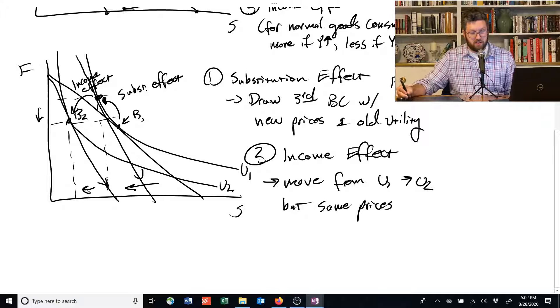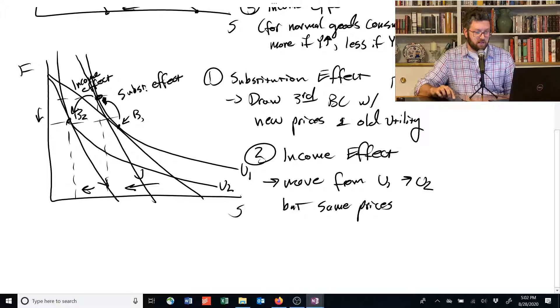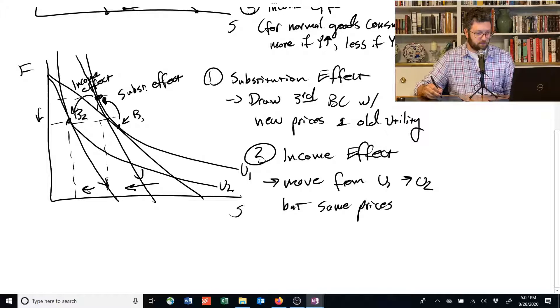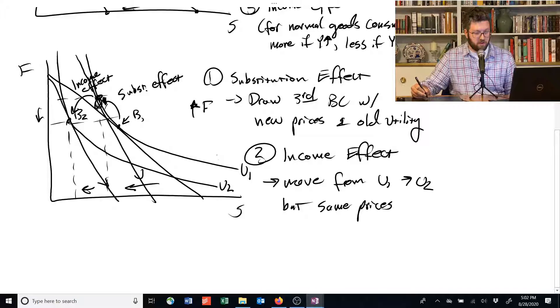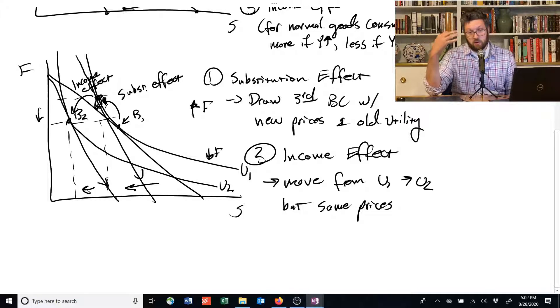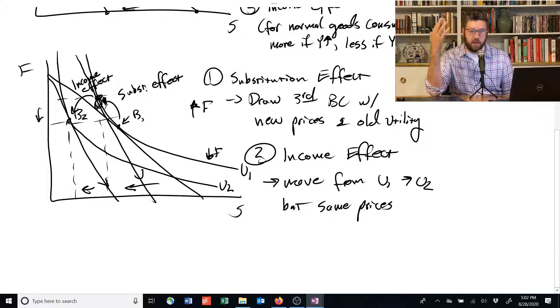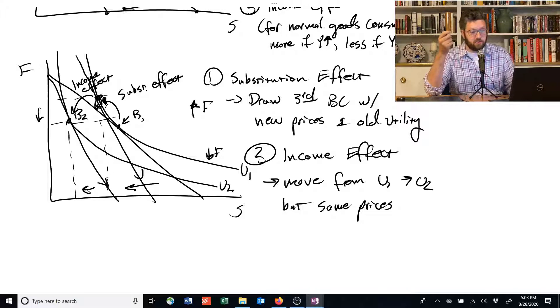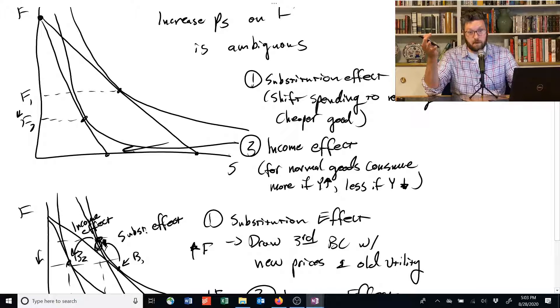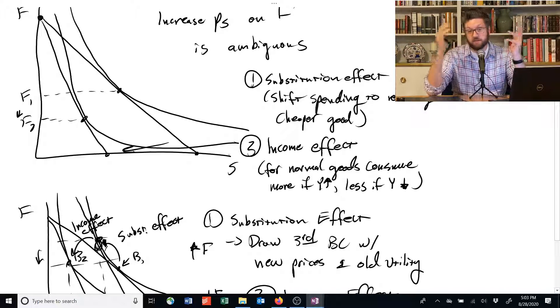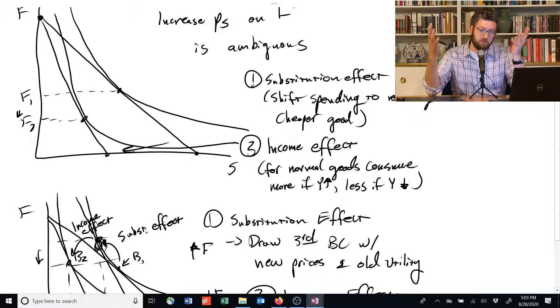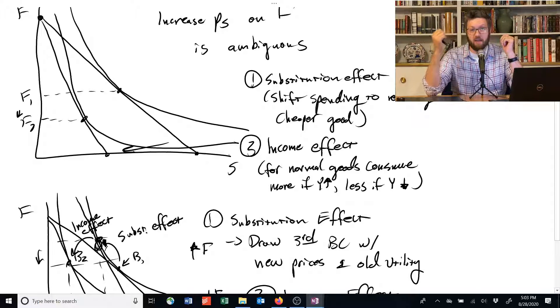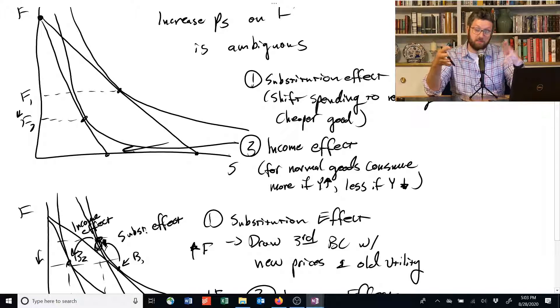So the substitution effect increases the demand for food. The income effect reduces it. And so depending on which is stronger, we can end up where we increase the amount of food we consume when the price of shelter goes up or we decrease it. So a decrease example is up here. And so decomposing this in these ways is kind of a useful way to think about how people's behavior can change when they have different prices and it can change in kind of unexpected ways.